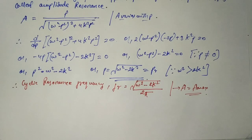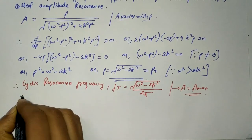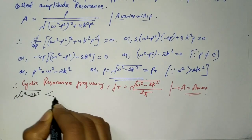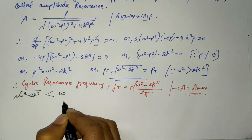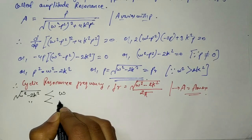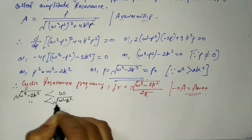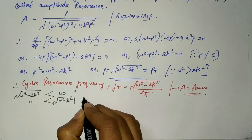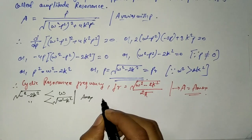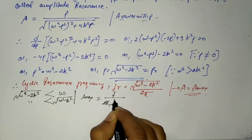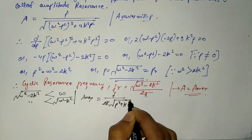The angular frequency of amplitude resonance, which is square root of (omega squared minus 2k squared), is less than both omega (the angular frequency for undamped motion) and also less than the frequency square root of (omega squared minus k squared) for the case with damping present. Under these conditions, A_max equals f divided by 2k times square root of (p squared plus k squared). Please remember this value.